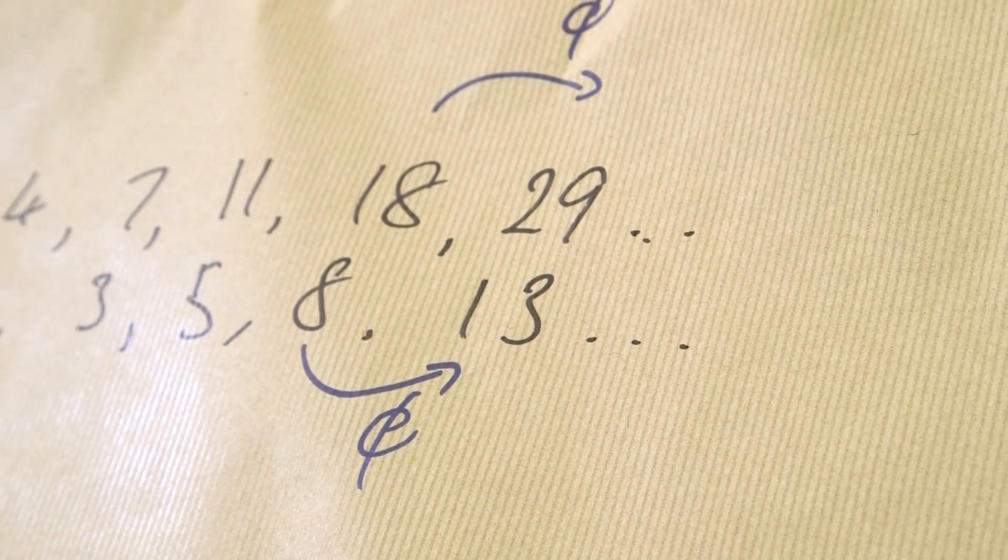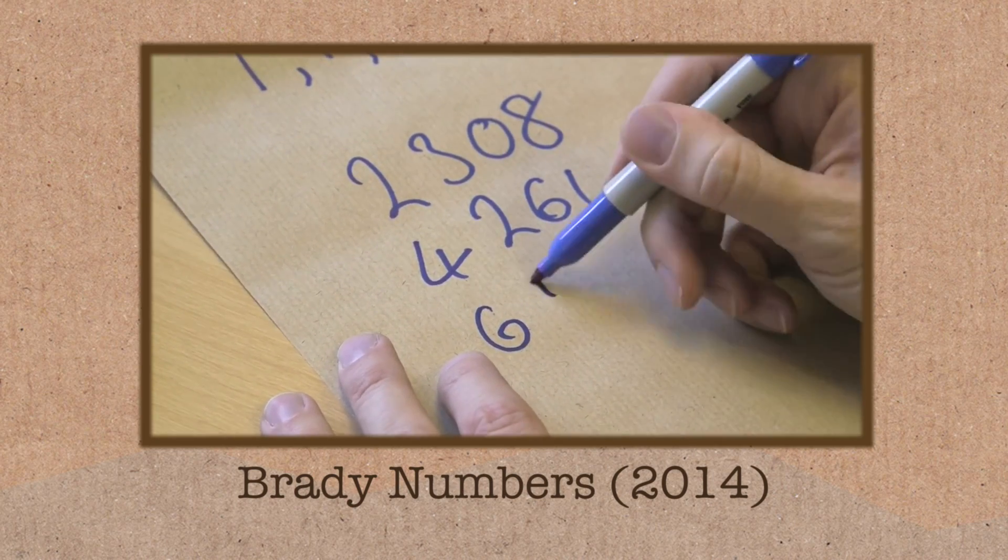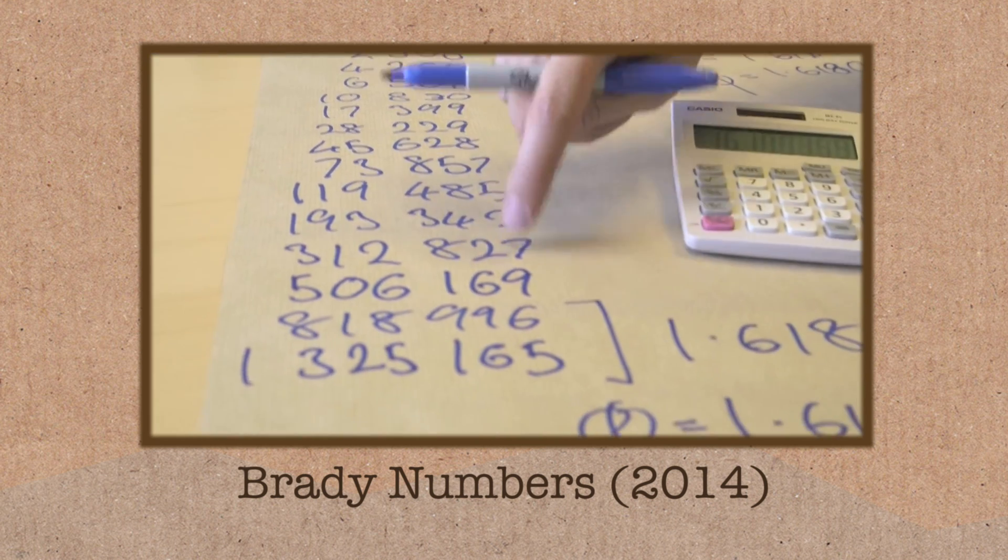And what I pointed out in our previous video, is Lucas numbers do that as well, so, again here, the ratio from 1 to the next approaches the Golden Ratio. In fact, any sequence where you start with 2 numbers and then add them to get the next one and repeat, always approaches the ratio of the Golden Ratio.